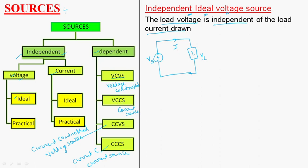In case of independent ideal voltage source, the load voltage is independent of the load current drawn by the circuit. Even though the load varies, the source voltage is always constant. If you draw the characteristics between voltage and current, the source voltage Vs is constant even though the current varies in the circuit. This is the independent ideal voltage source.